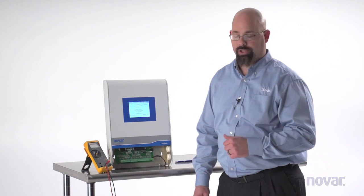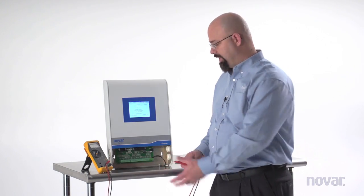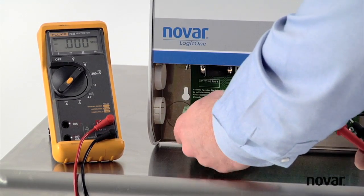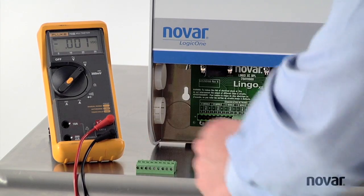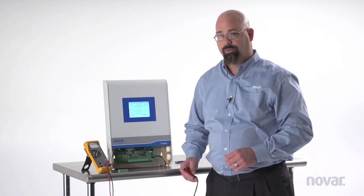So the first thing we always want to do is remove the wires from the module. In this case, we'll simulate that. I'm going to unplug this Phoenix connector with the wires attached, so all I've got is the terminal behind it.